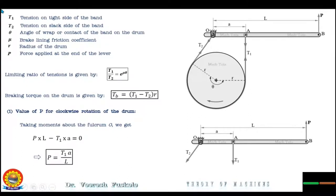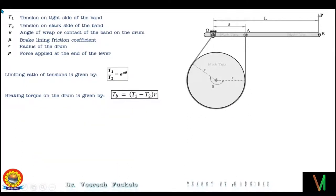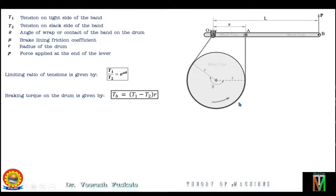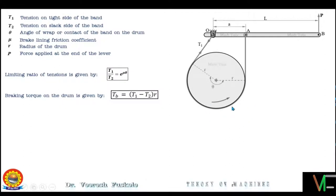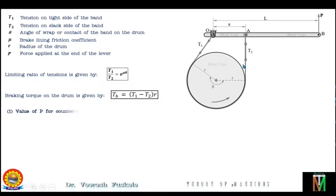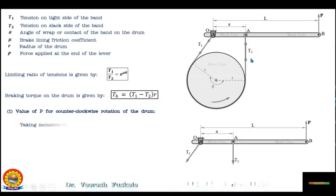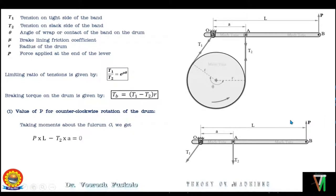Let's move to the second case: finding the value of P for anticlockwise rotation of the drum. As shown in the figure, as the drum rotates counterclockwise, the end of the band connected to the fulcrum O will be the tight side with tension T1, and the end of the band attached to A will be the slack side with tension T2. Now let's take moments of the various forces about fulcrum O.